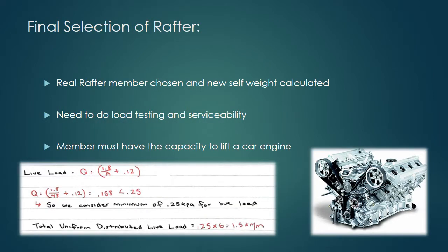Final selection of rafter. Once we chose the rafter member suitable for the shed, we had to redo the load testing and serviceability limit state calculations to double check that the member was still adequate for the shed. Note, due to the wind load on the rafter being less than the minimum 0.25 kPa live load stated in the Australian standards, we just assumed that the live load was 0.25.